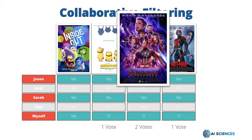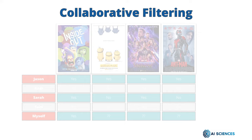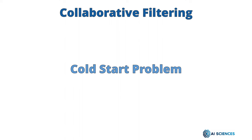This is the way collaborative filtering works in order to recommend products. One thing to notice is that it didn't consider any features or properties of the content — it totally depends on how people rate the product. However, collaborative filtering has one big problem, called the cold start problem.